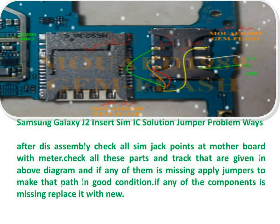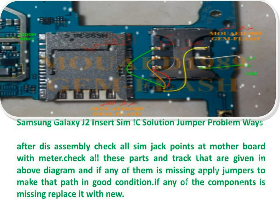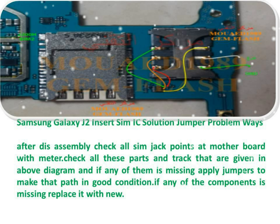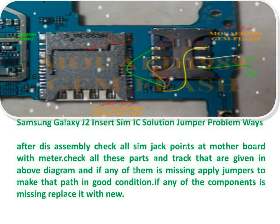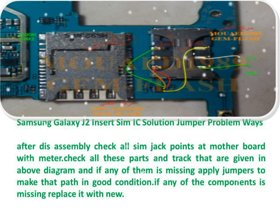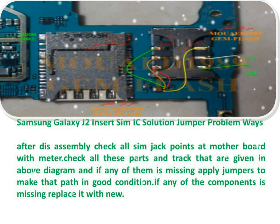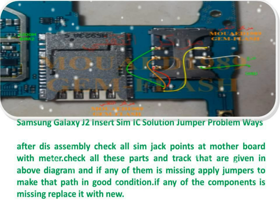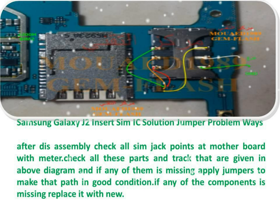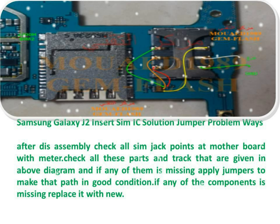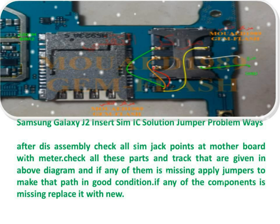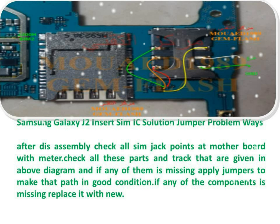After disassembly, check all SIM jack points, parts, and tracks that are given in the diagram above. If any of them is missing, apply jumpers to make that path in good condition. If any component is missing, replace it with a new one.